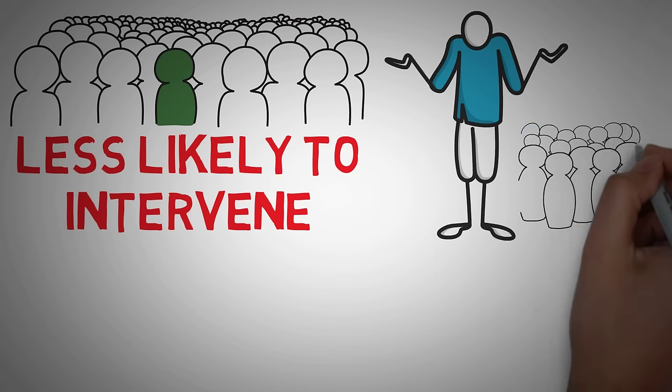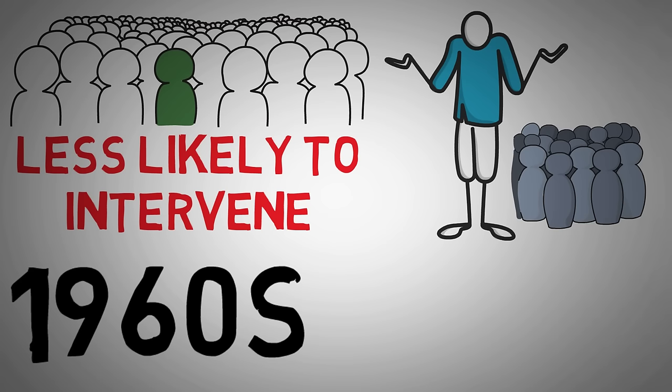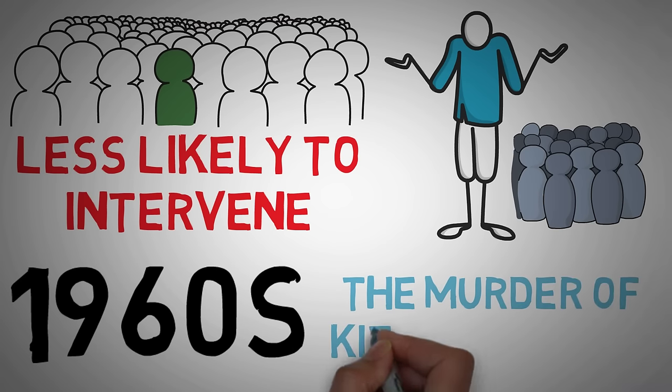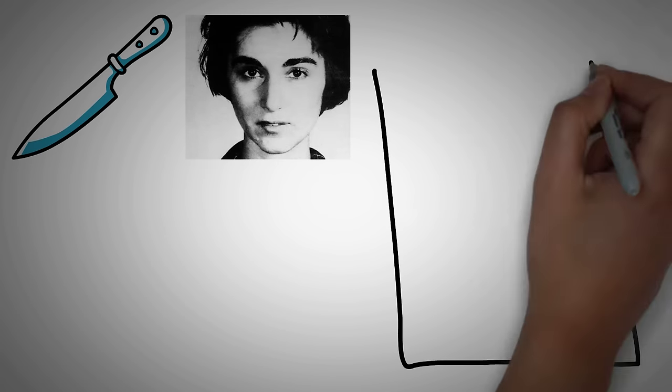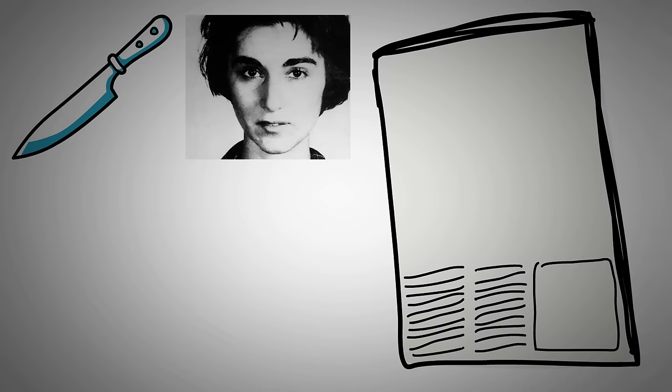The bystander effect has been a subject of study all the way back to the 1960s. Many psychologists believe that research on the bystander effect started with the murder of Kitty Genovese. Genovese was murdered outside of her apartment at 3 in the morning in 1964. Two weeks later, the New York Times published an article titled 37 Who Saw Murder Didn't Call the Police.